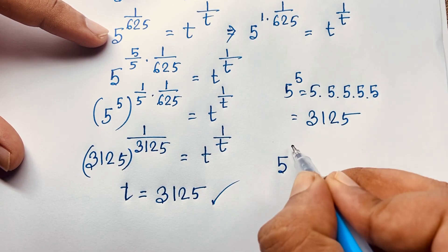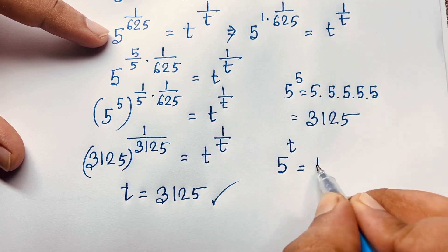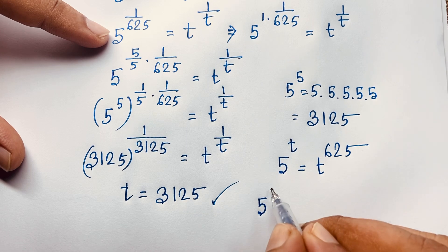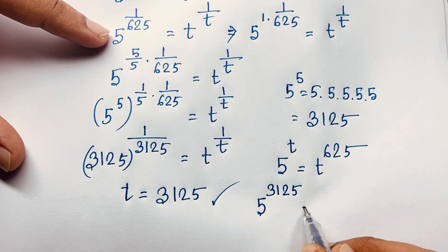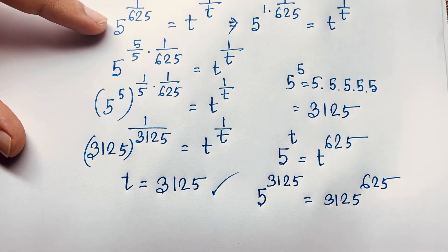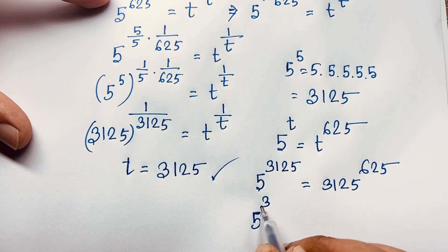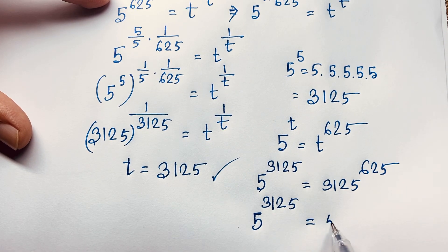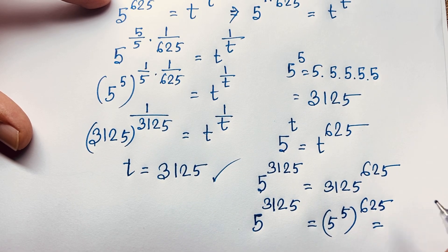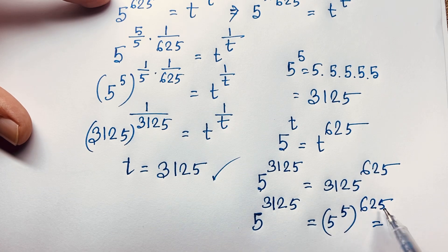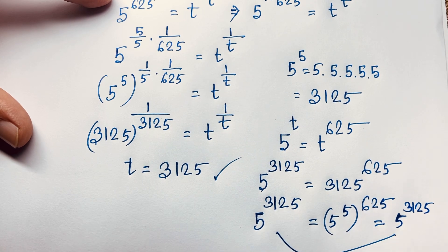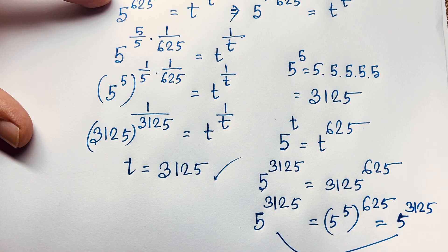Let's verify: our question is 5 to the power t is equal to t to the power 625. Substituting t equals 3125, the left side is 5 to the power 3125. The right side is 3125 to the power 625, and since 3125 equals 5 to the power 5, this becomes 5 to the power 5, bracket to the power 625, which by the exponent formula gives 5 to the power 3125. So left-hand side and right-hand side are both equal in this exponential expression.